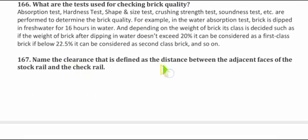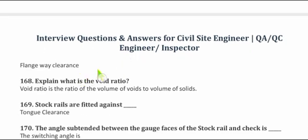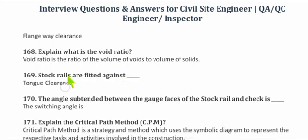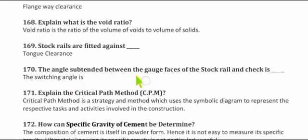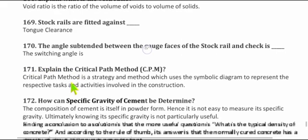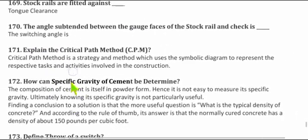Question 167: Name the clearance defined as the distance between the inner face of the stock rail and the check rail — this is called flangeway clearance. Question 168: What is the void ratio? It is the ratio of the volume of voids to the volume of solids. Question 169: Stock rails are fitted against tongue clearance. Question 170: The angle subtended between the gauge face of the stock rail and the check rail is called the switching angle.